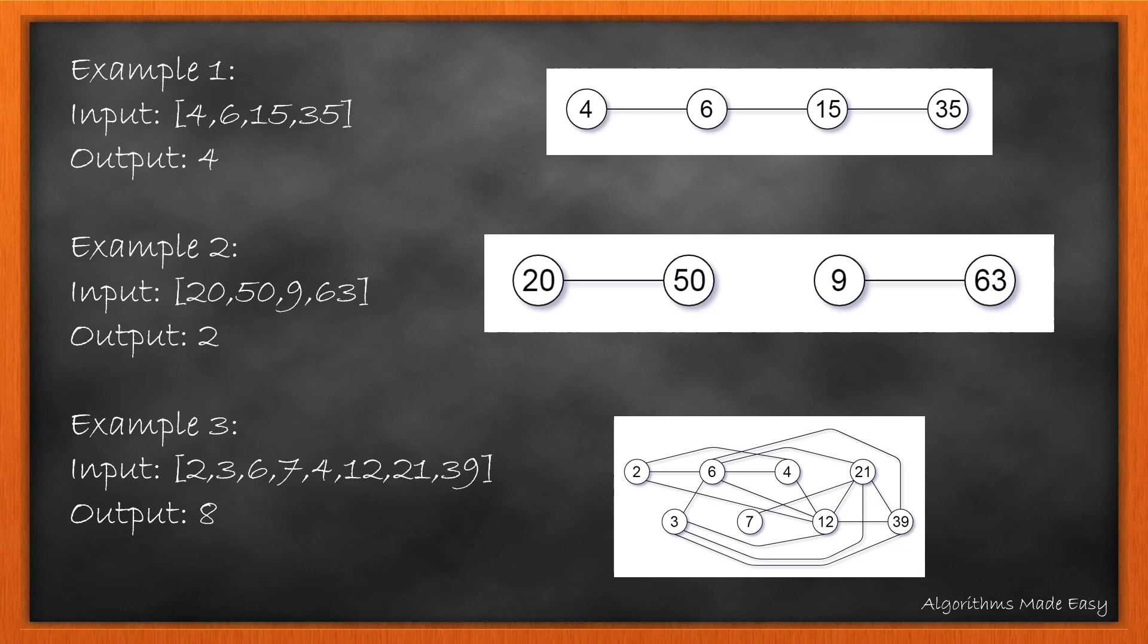In the second example, we see that 20 and 50 are connected where common factors are 2 and 5, while 9 and 63 is connected because common factor is 3. The largest connected component is of size 2 only. Let's see the third example in much more detail.